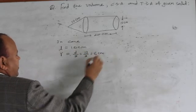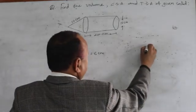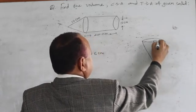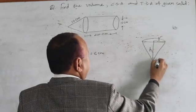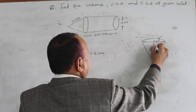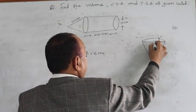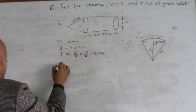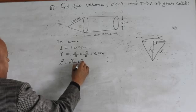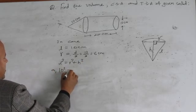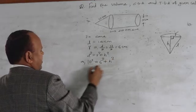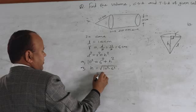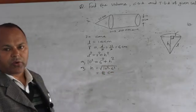Radius of the cylinder and radius of the cone equals diameter divided by 2, which is 12 by 2 = 6 centimeter. For the cone, this is the radius, this is the vertical height, and this is the slant height. Since it is a right cone, by using the Pythagorean theorem: l² = r² + h². So 10² = 6² + h², giving h = √(10² − 6²) = 8 centimeter.